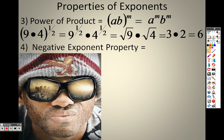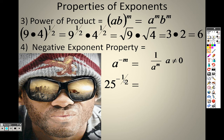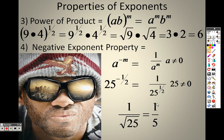The Negative Exponent property is also the same. If you have a negative in the numerator, you move it to the denominator; if you have a negative in the denominator, you move it to the numerator. Right now we have 25 to the negative one-half power. That just means I put it over one, so it's one over 25 to the one-half. 25 to the one-half is the square root of 25, which is 5, so really I have one-fifth.